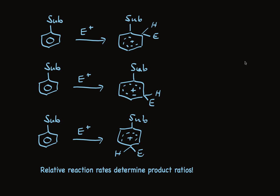The relative rates will probably be determined by the stability of the intermediates we're forming. These are endothermic reactions, and Hammond's postulate tells us we can expect that to be the case. So we need to study the relative stabilities of these intermediates for ortho, meta, and para substitution to understand the product ratios. Some substituents direct to the ortho and para positions; others direct to the meta position. Let's understand that by looking carefully at the intermediate.